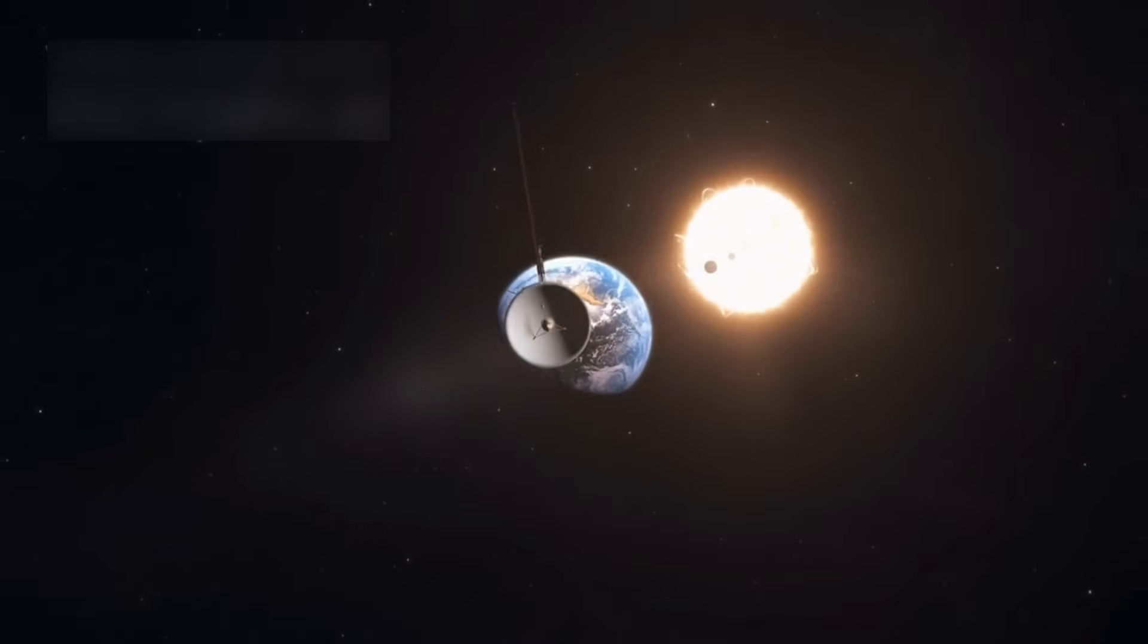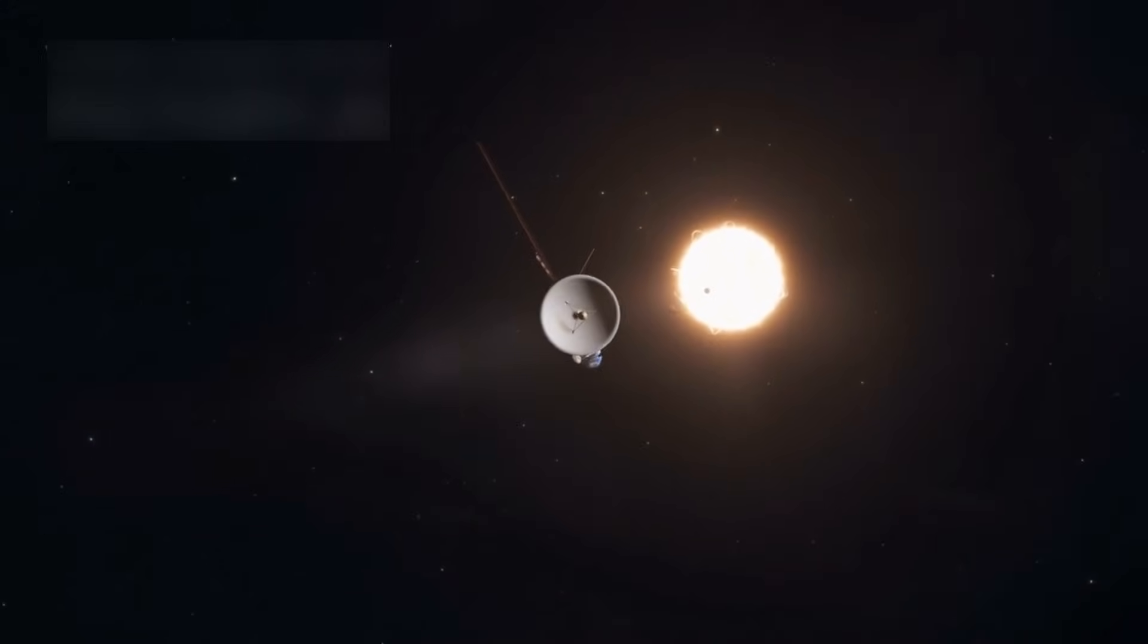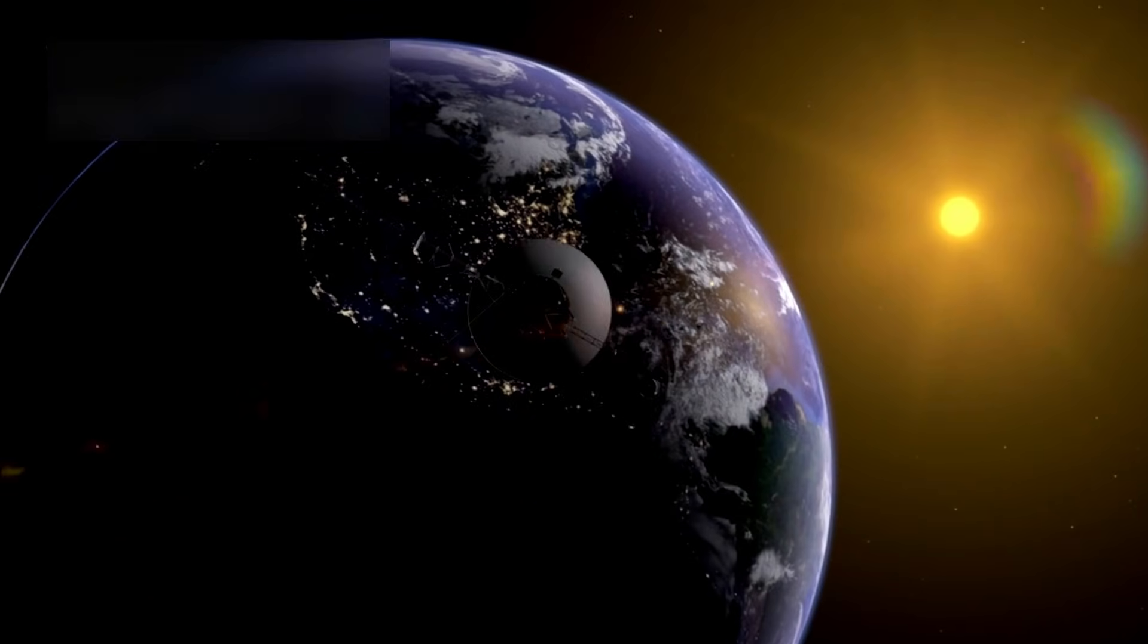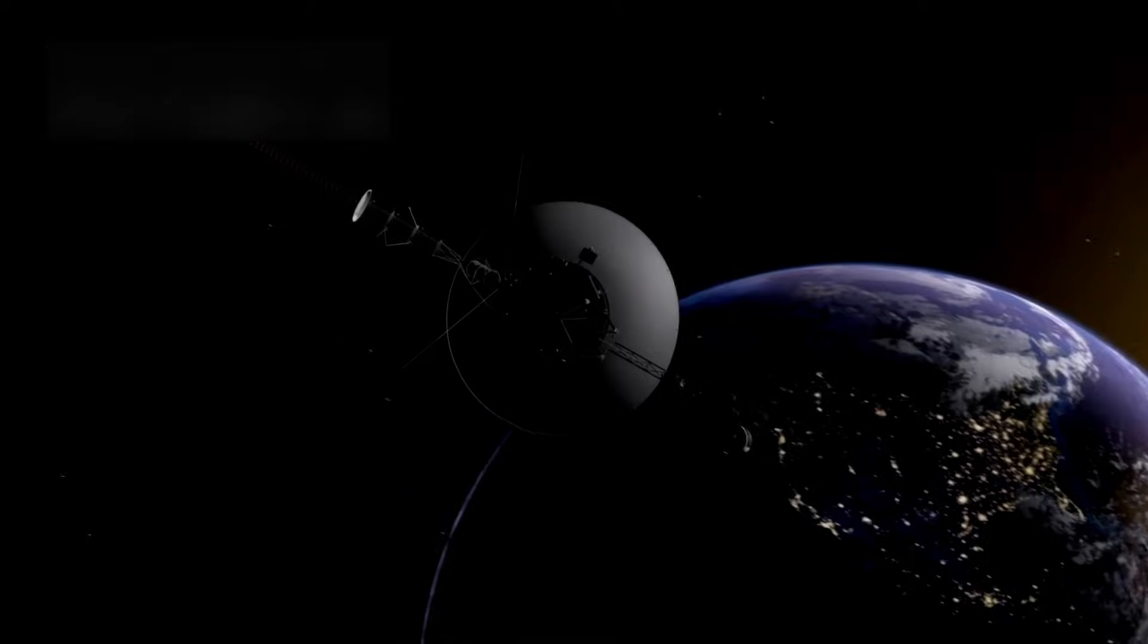In 2012, it crossed a major boundary called the heliopause, where the influence of our sun fades and interstellar space begins. This was a historic moment, making Voyager 1 the first human-made object to leave the solar system.